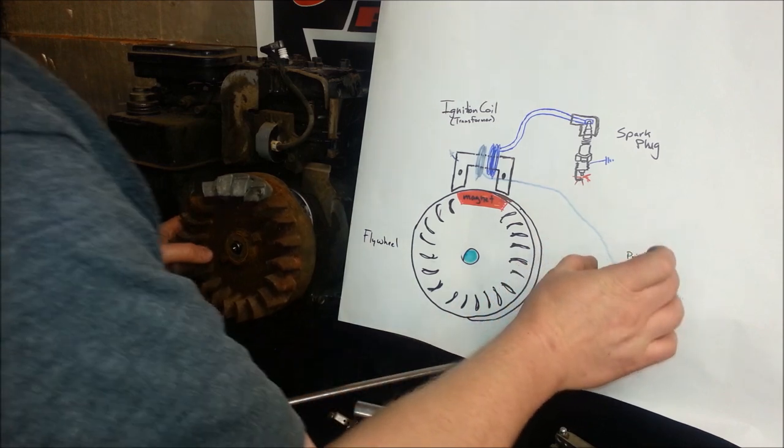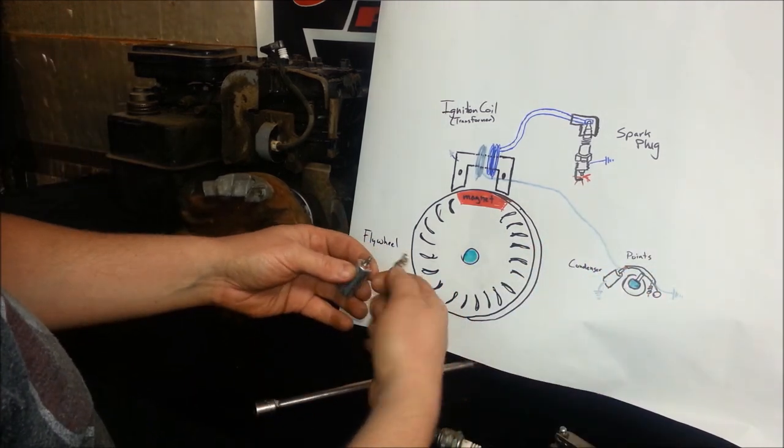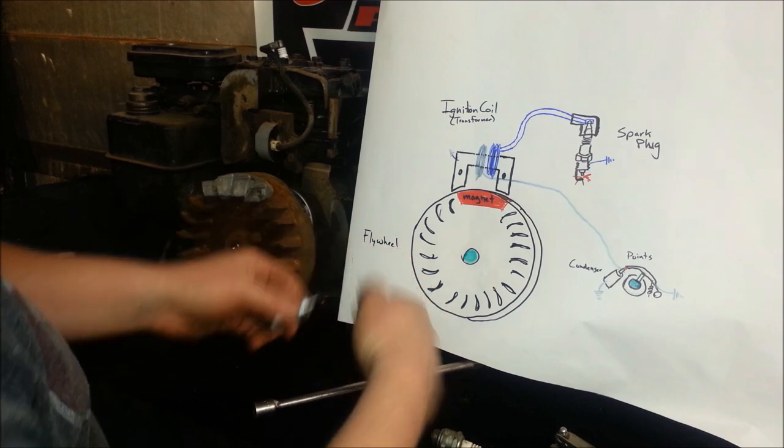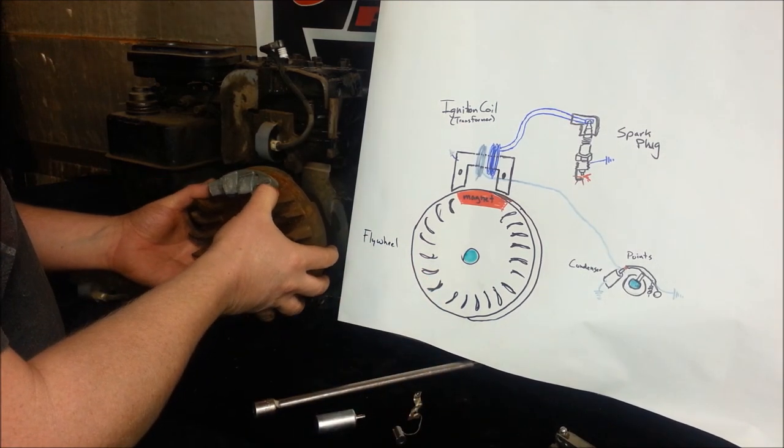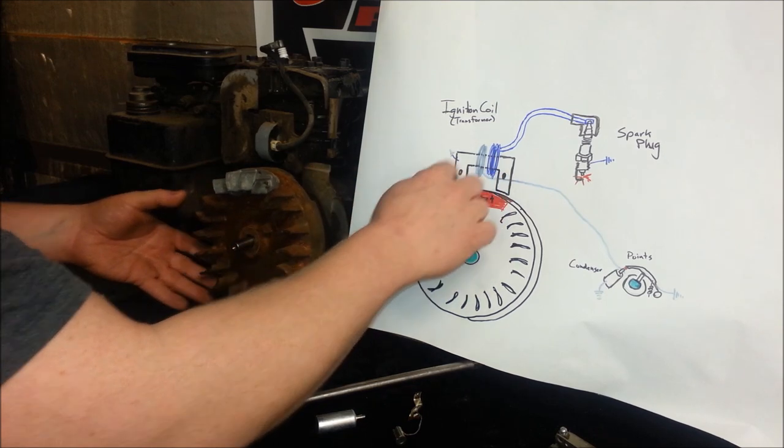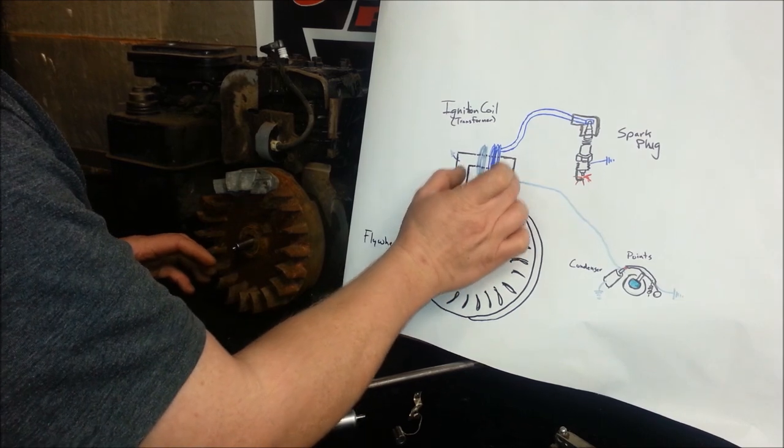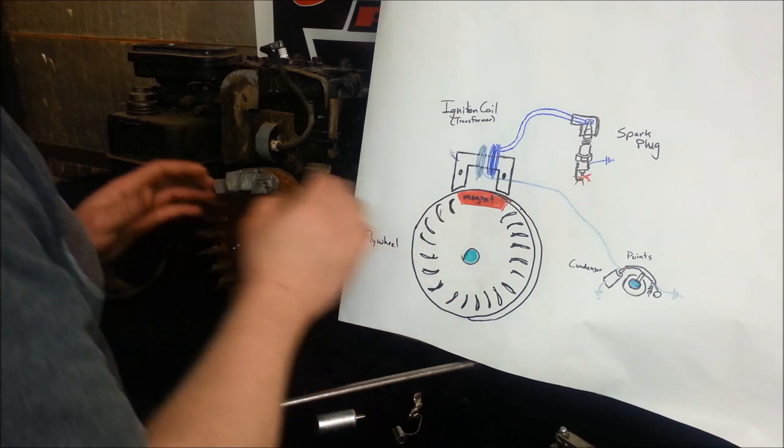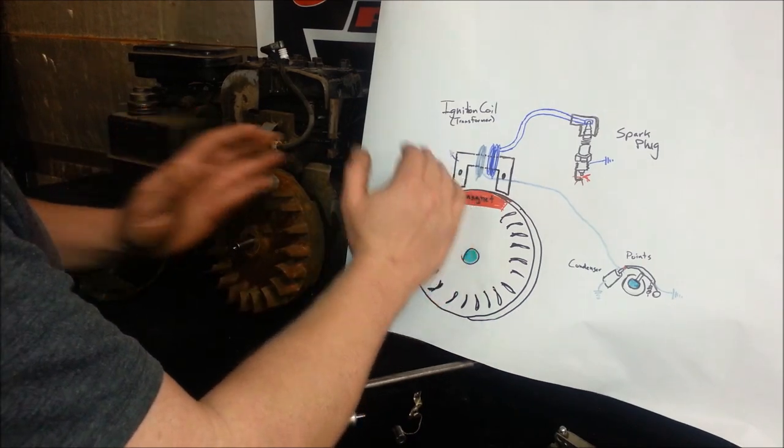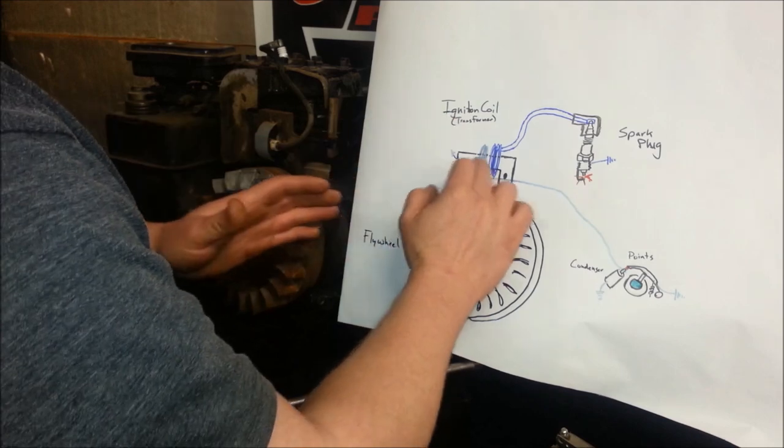The points are open 99% of the time. They're not touching. It is sitting out here, not touching. As the magnet rotates and gets into position right below the coil, it passes the armatures of our coil. And what happens is every magnet will have a north and south pole. So as it passes one, it pushes a north and south field, a north field and then a south field through one armature.